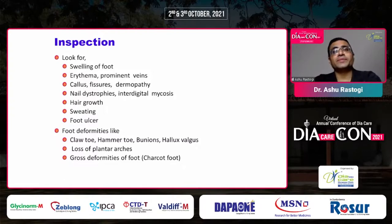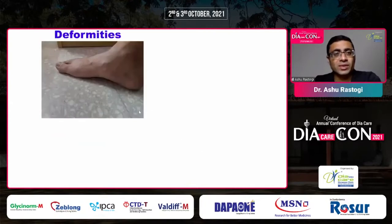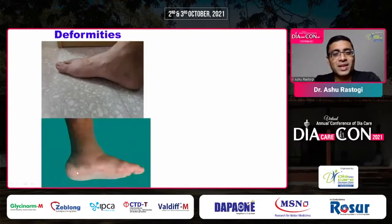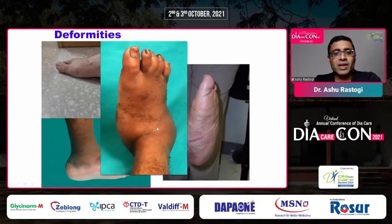Look for deformities like clawing of toes, hammer toes, and bunions, because these lead to abnormal distribution of pressure over the foot, which can cause ulcers. Importantly, examine the plantar arches — the longitudinal and transverse arches given to us absorb, reduce, and redistribute pressure. Once plantar arches are lost, foot ulcers can occur. In a patient with Charcot foot, the medial longitudinal arch is lost, leading to pes planus and then rocker-bottom deformity.